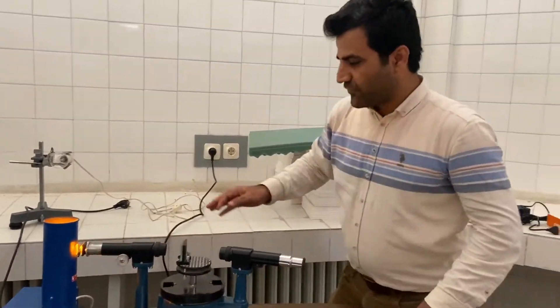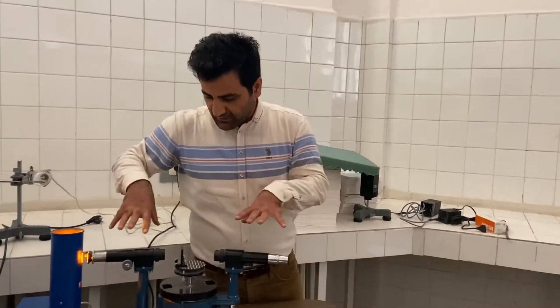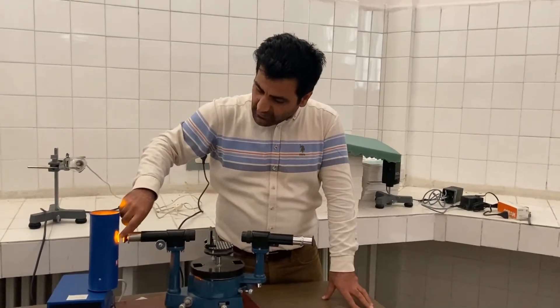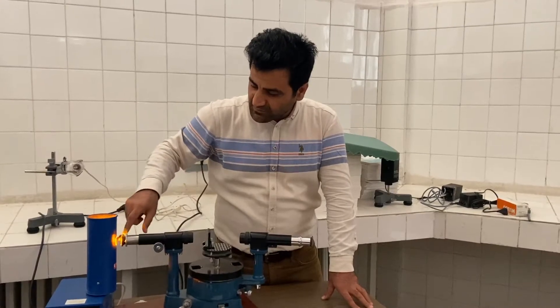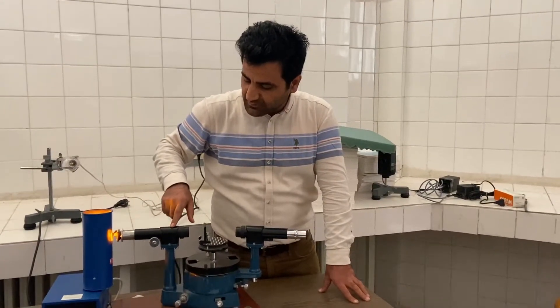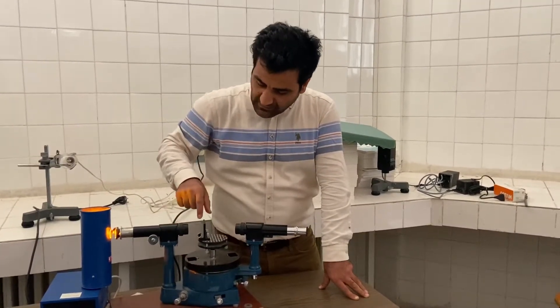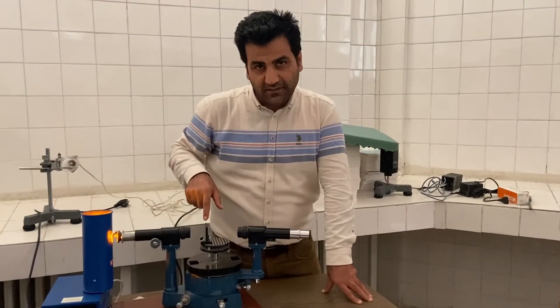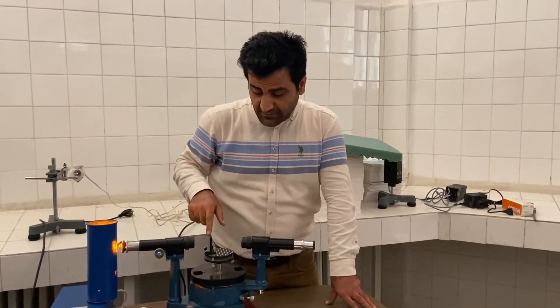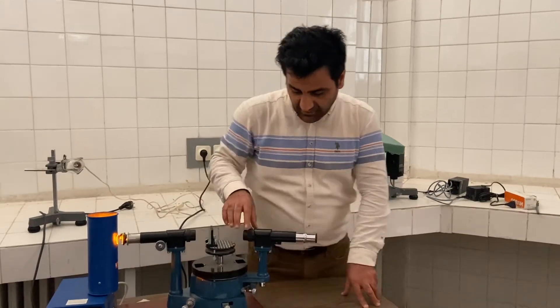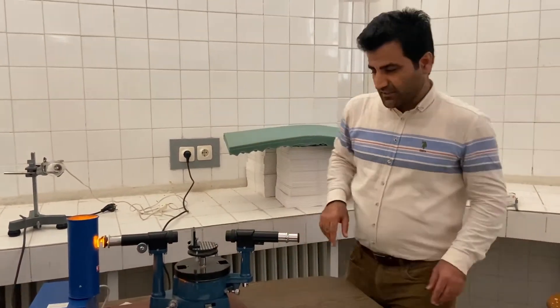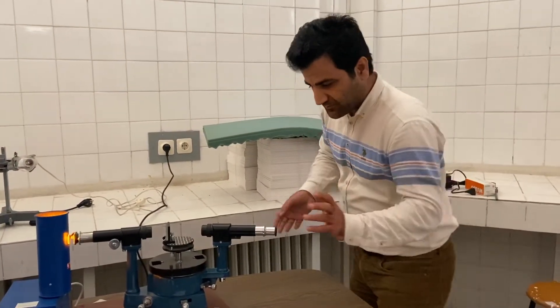So first let's look at the spectrometer. In here we have a collimator. The light comes into the collimator, and then there's a grating. After the grating we have a telescope here, and from the telescope you can see the light.